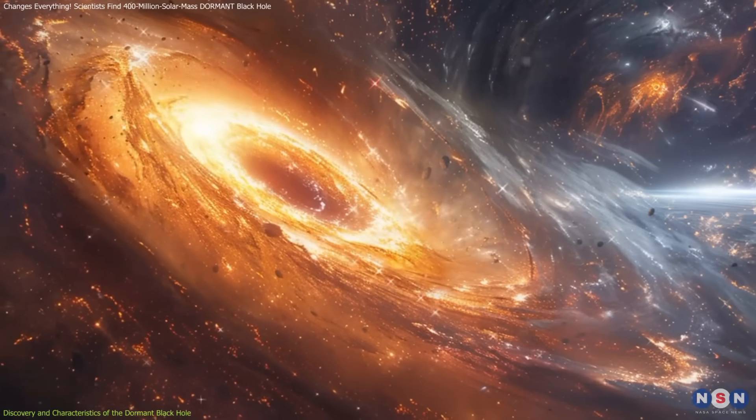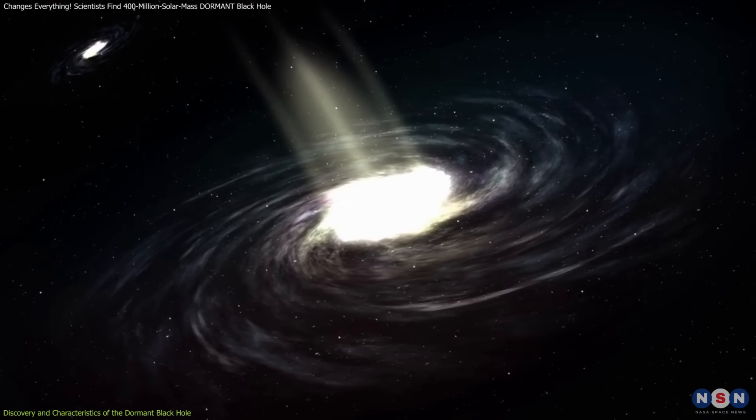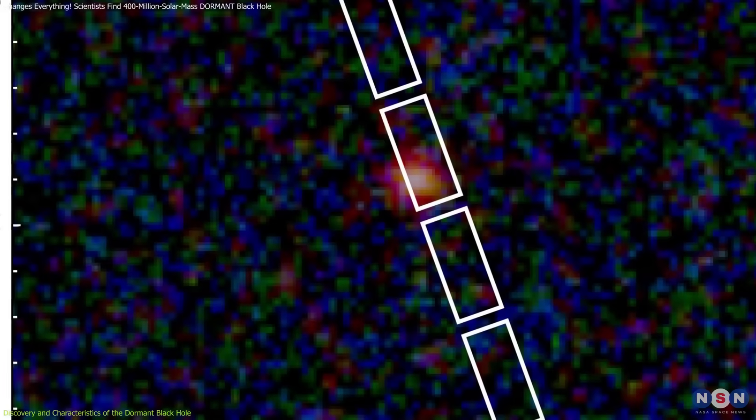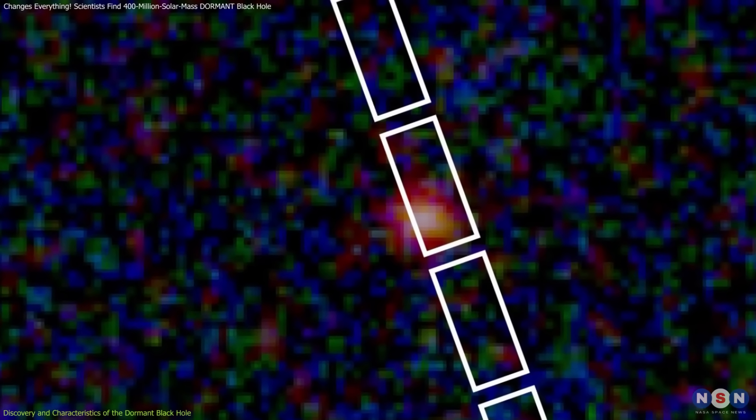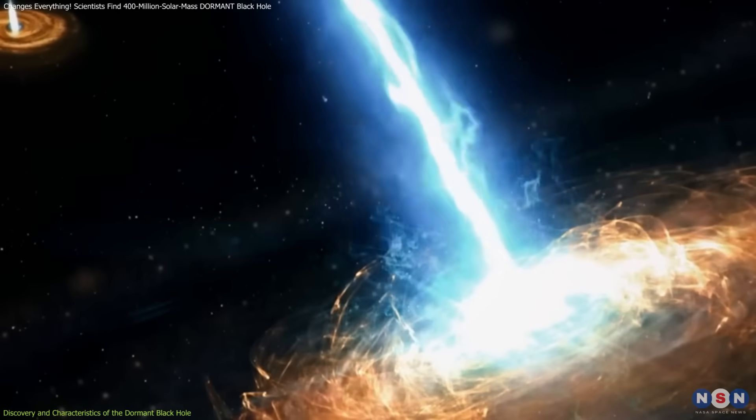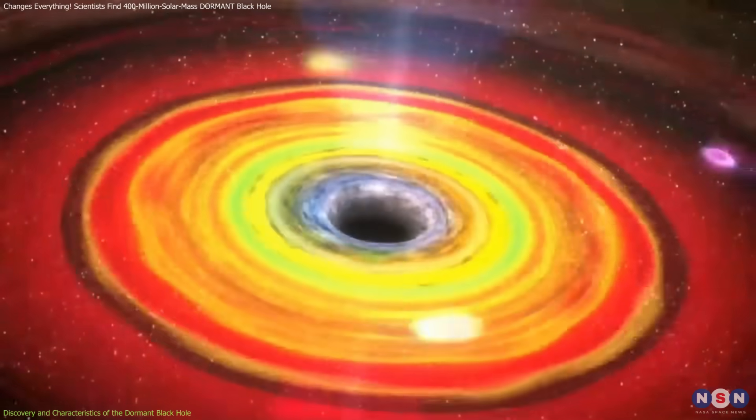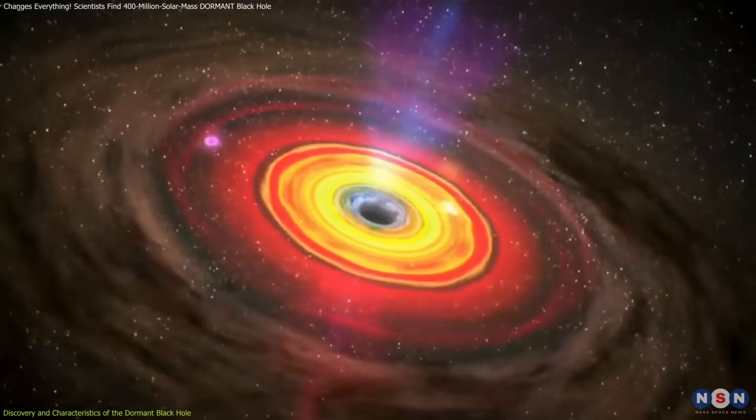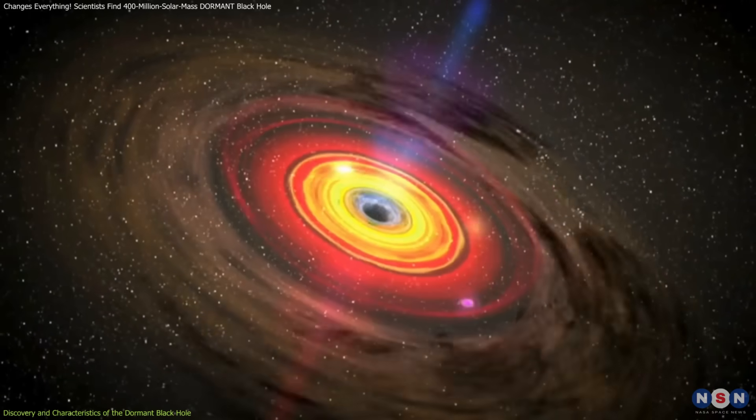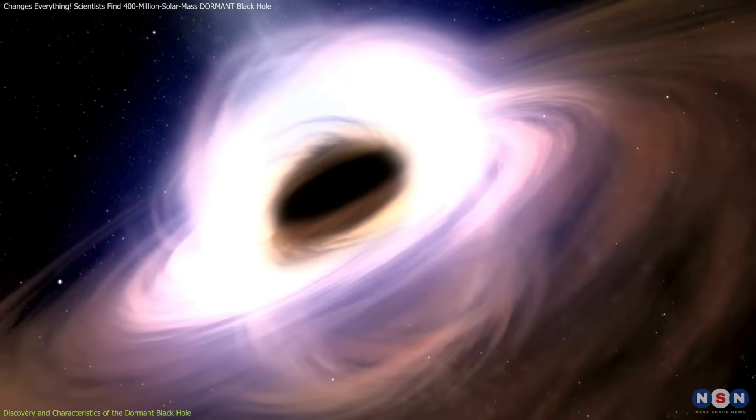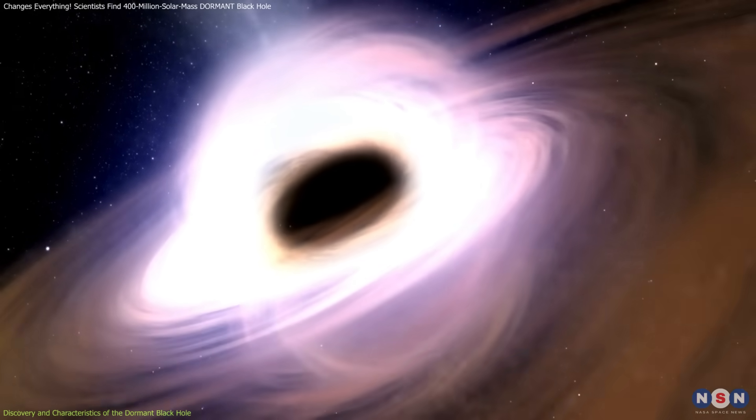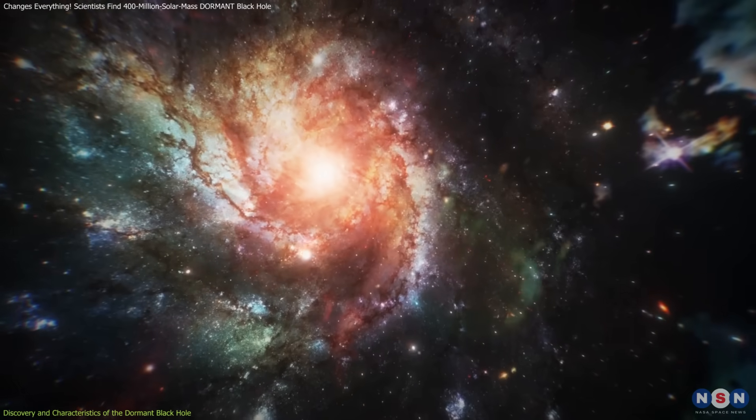Here's where it gets even more interesting. The black hole's host galaxy is relatively small, yet the black hole accounts for a staggering 40% of its total mass. Compare that to black holes in the local universe, which typically make up about 0.1% of their host galaxy's mass. This discrepancy suggests that black hole growth may have occurred before, or even independently of, galactic growth in the early universe.